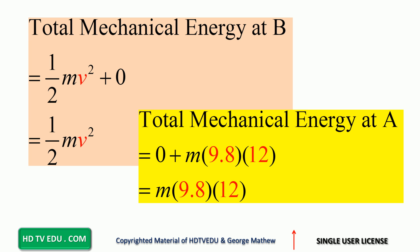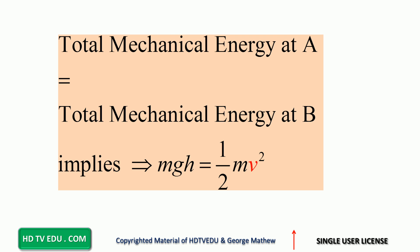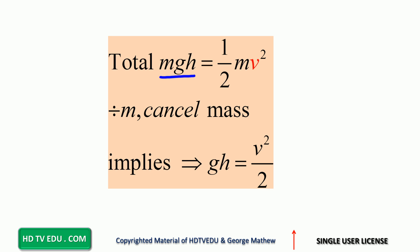From point A we have m times 9.8 times 12, and from point B we have one half mv squared. Total mechanical energy at A equals total mechanical energy at B. So we set mgh equal to one half mv squared, then cancel mass on both sides.